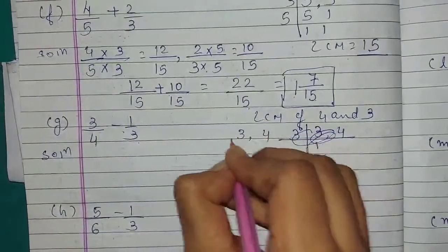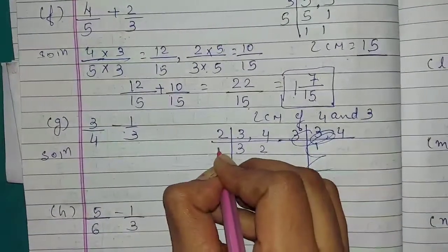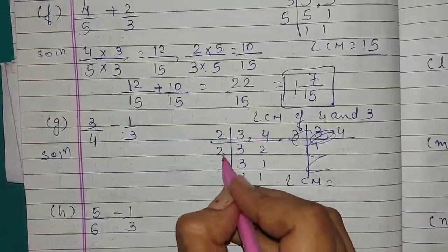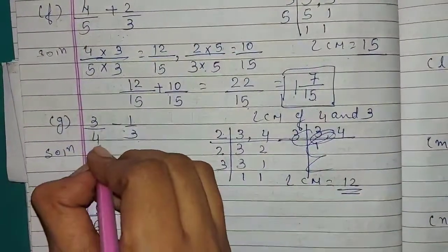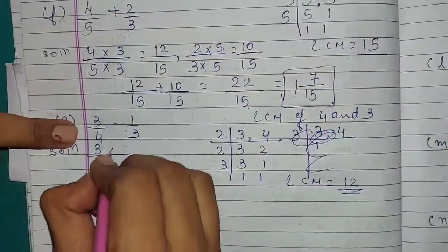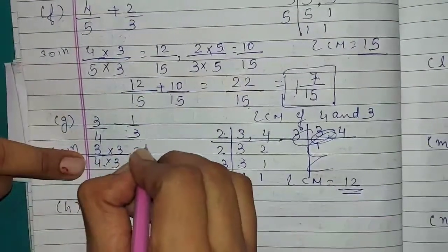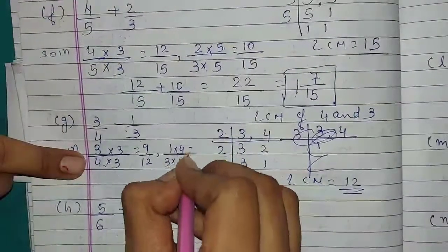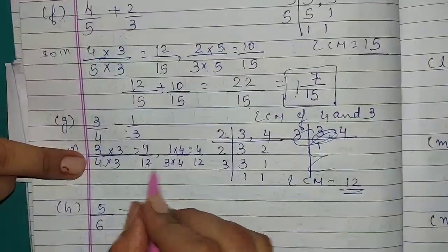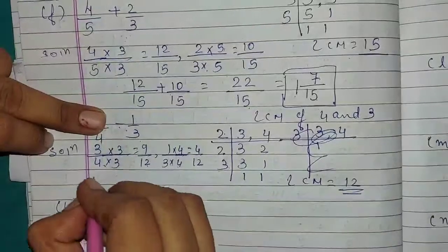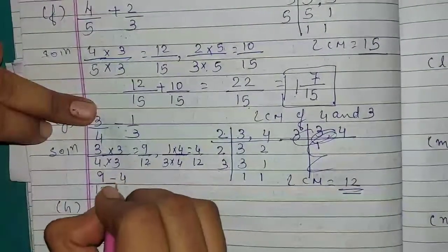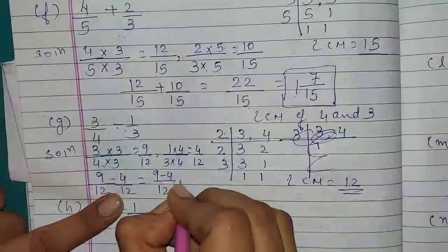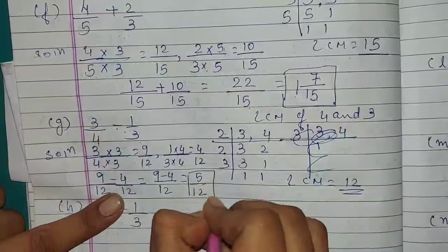LCM of 3 and 4: 2×2=4, 4×3=12. LCM equals 12. We make denominator 12. For 3 upon 4, multiply by 3 upon 3: result is 9 upon 12. For 1 upon 3, multiply by 4 upon 4: 1×4=4, 3×4=12, giving 4 upon 12. Subtraction sign is given. 9 upon 12 minus 4 upon 12. They are like fractions. 9 minus 4 equals 5 upon 12.